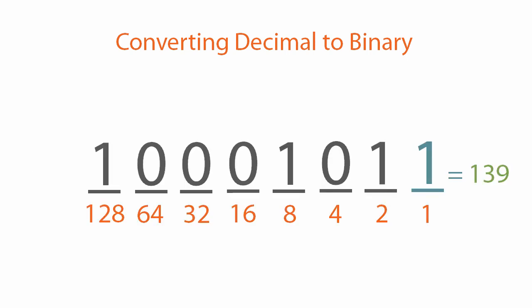And that's it — we've converted 139 decimal to binary. It takes a little longer, mainly because we're used to thinking in decimal rather than binary, so going from decimal to binary doesn't come naturally — at least not for most people.